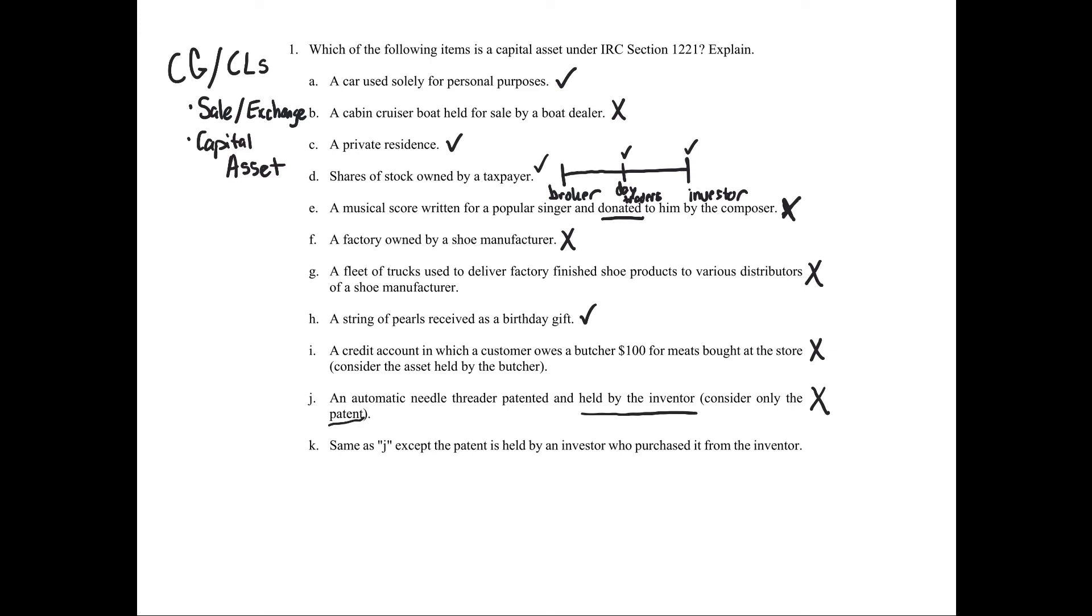K, same as J, except now an investor purchased it from the inventor. What is that? Well, we're an investor and we're not the self-creator. Therefore it's going to be a capital asset. Now, one thing I want to know is if I told you that this was used in business in K, if it was a business patent purchased from the inventor and then it was used in business and amortized, now you're talking about number two on our list. Personal property, subject depreciation, amortization used in business. And guess what? Now it's considered not a capital asset. So again, it all depends on how you hold it, what your activity is. So it makes a big difference.